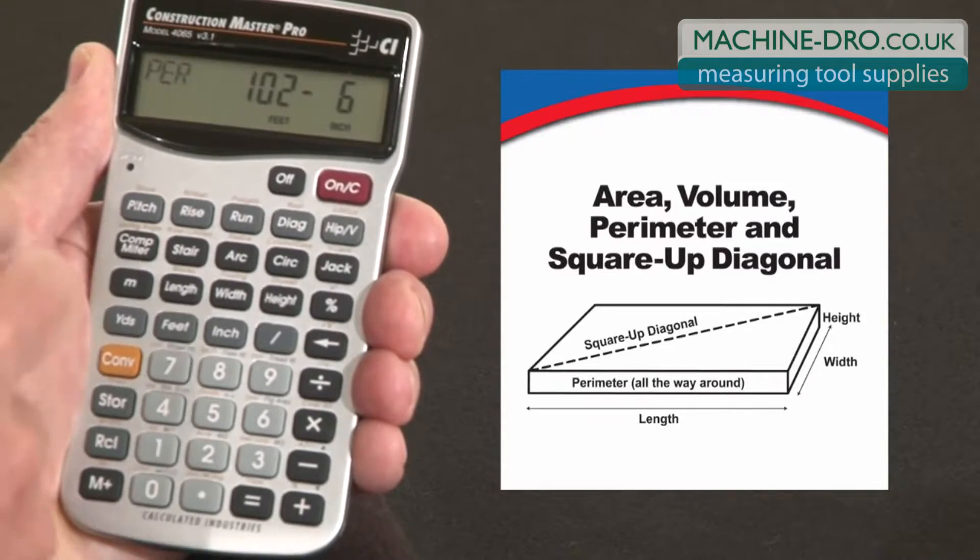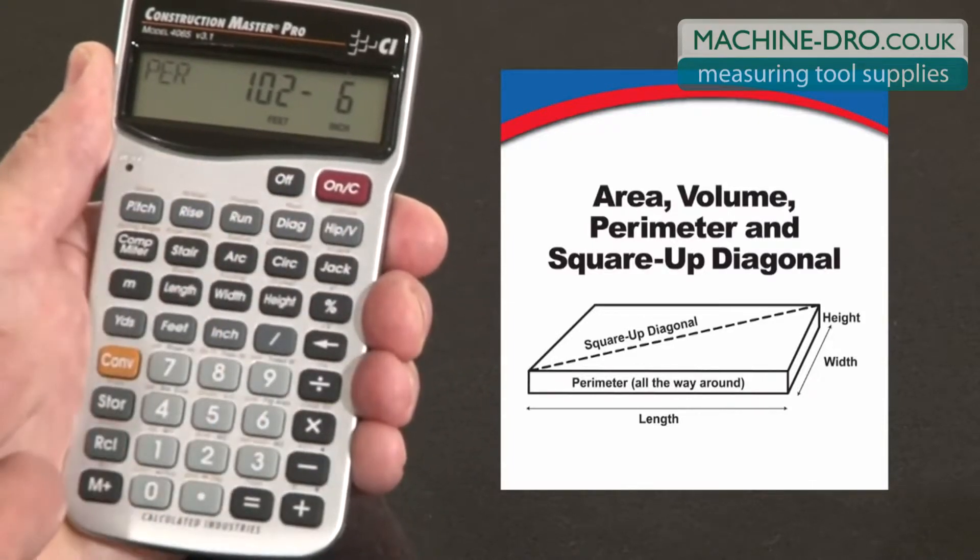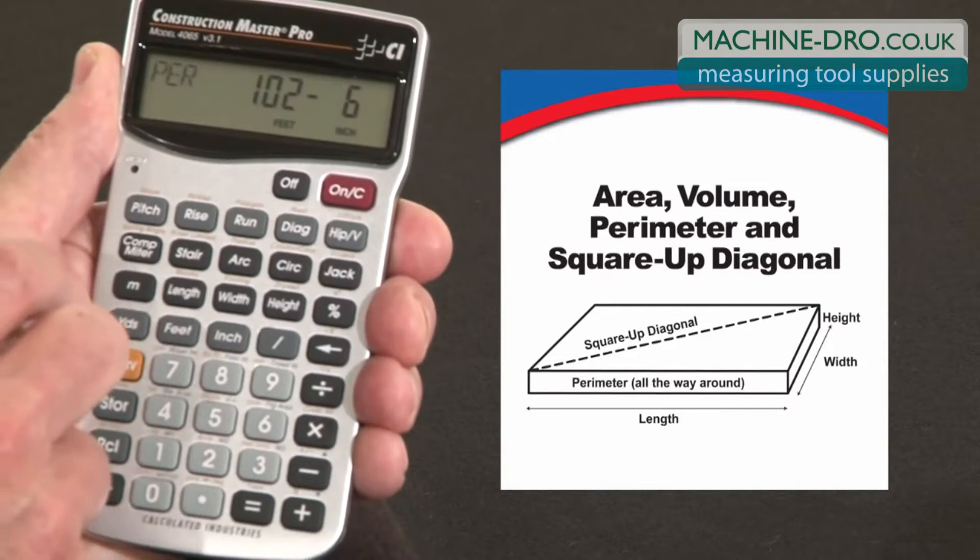Press it again. There's the perimeter. That's how many lineal feet around this pad you'll need for any kind of form boards or trim or treatment like that.